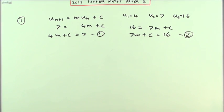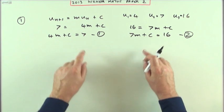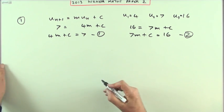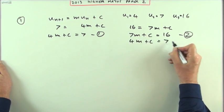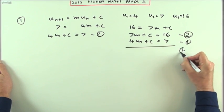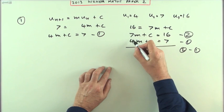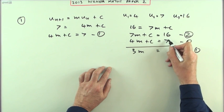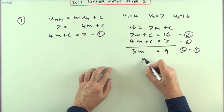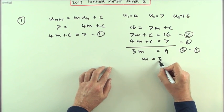Two equations and two variables, you can solve it quite easily. You can see that you're going to subtract them. 4m plus c equals 7, that was number 1. If I do 2 take away 1, 7 take away 4 is 3 lots of m. The c's cancel out. 16 take away 7 is 9. Divide by 3, m equals 3.